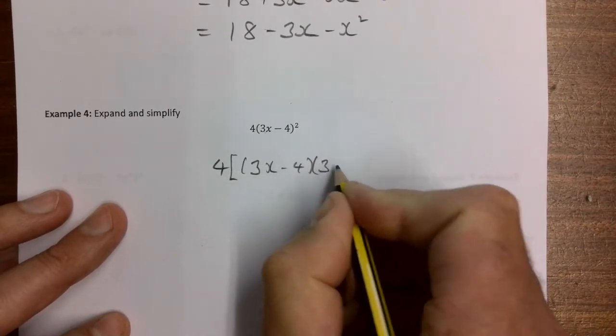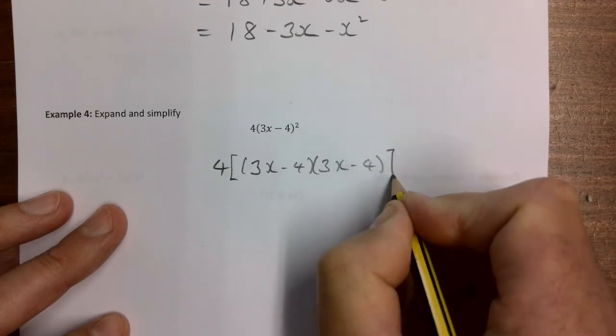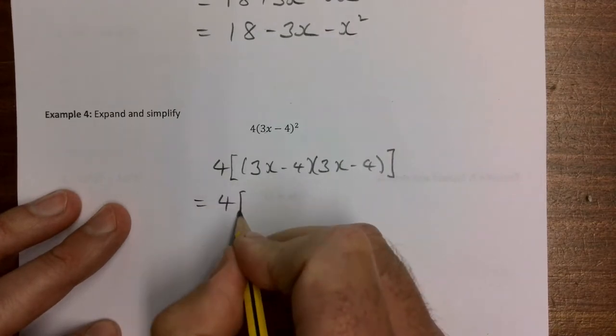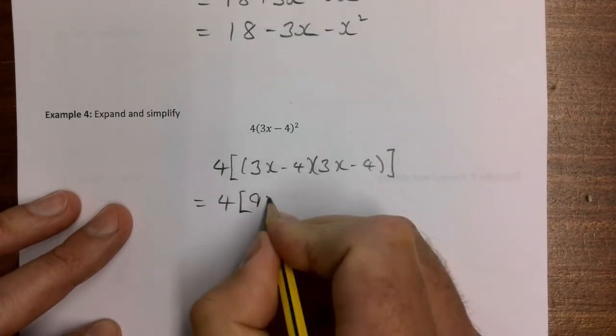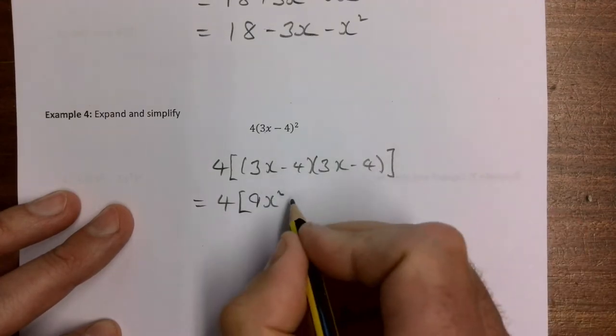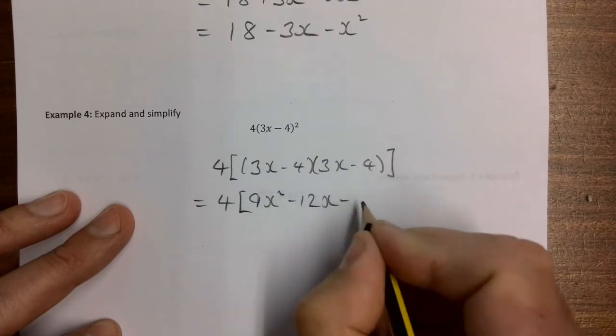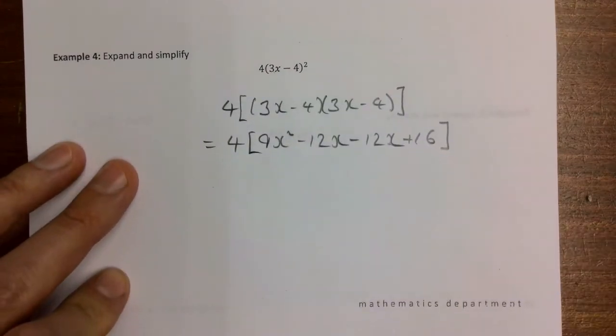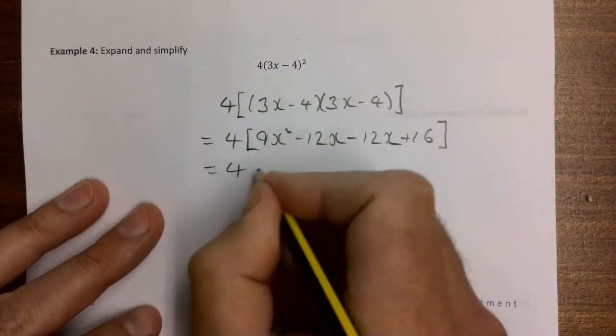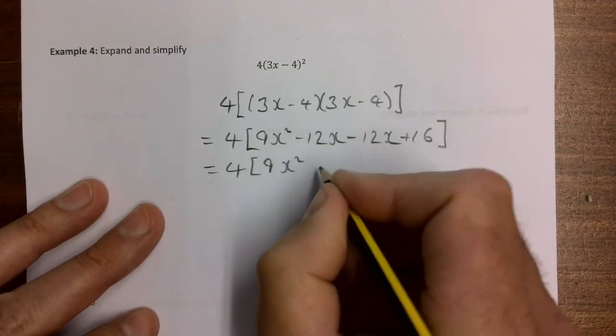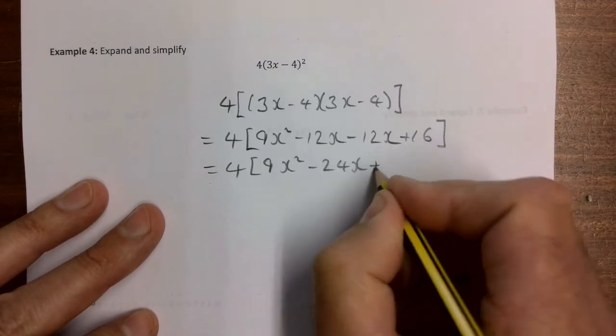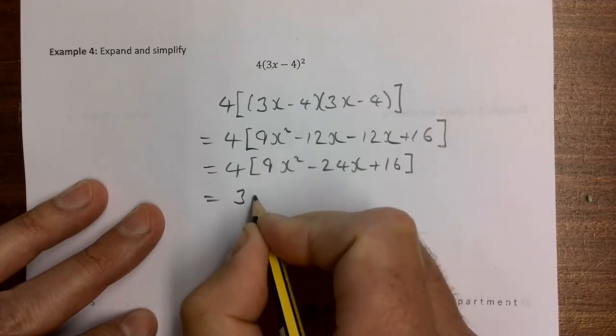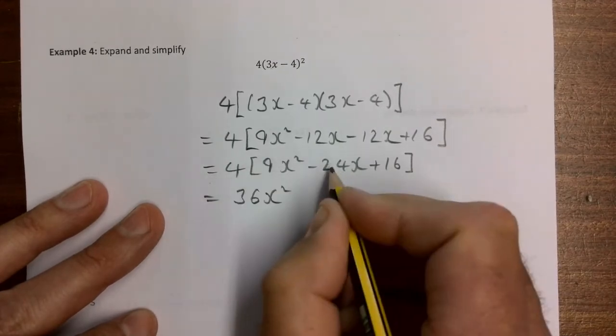I hope we're happy to see that I've written the same question again, only just a different way. So that's going to be: first is 9x squared, outer is minus 12x, inner is minus 12x, and minus 4 times minus 4 is plus 16. I think I've got two lines left. 4 times 9x squared, joining together my like terms is minus 24x plus 16. 4 times 9 gives me 36x squared, 4 times minus 24 gives me minus 96x, and 4 times 16 is plus 64.